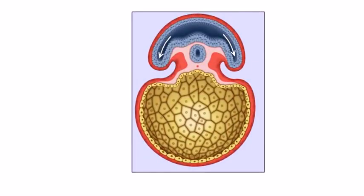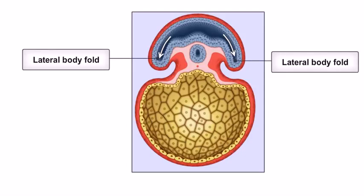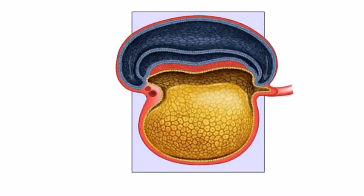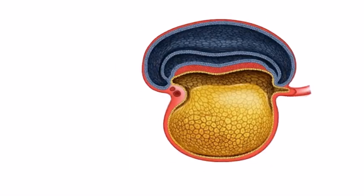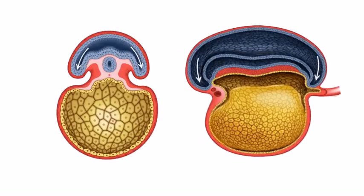Folding of the embryo in the horizontal plane results in the development of two lateral body folds. Folding in the median plane results in the development of the cranial and caudal folds. Folding in both of these planes takes place simultaneously, resulting in the rapid development of the embryo.